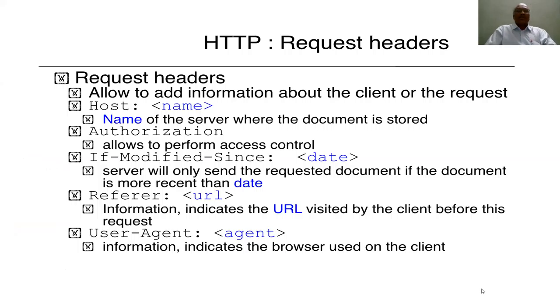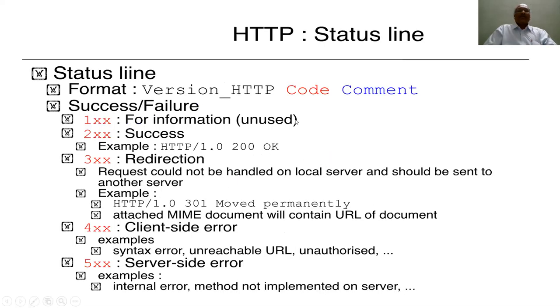Once we have seen a small demo about the request made from the client to the server with HTTP, let us understand more closely what HTTP is all about. The request header comes from the client side — in the example, no username was given and authorization was not done, but you can also specify authorized users if authorization is required on the server. The request headers from the client side contain things like the hostname of the server where the document is stored, access control information, when the document was modified, and the user-agent indicating the browser used by the client.